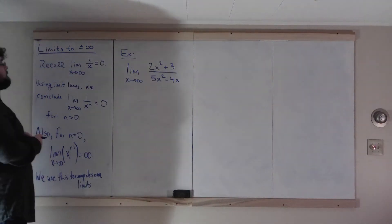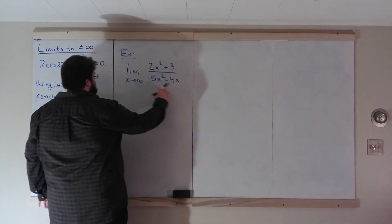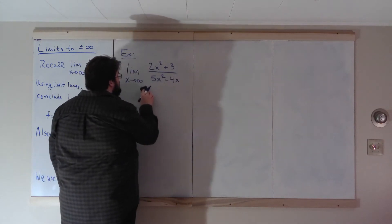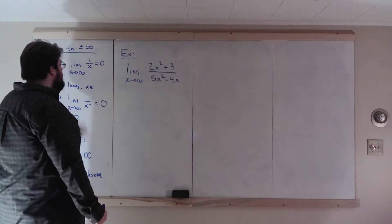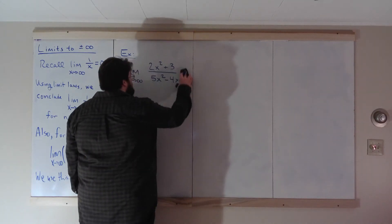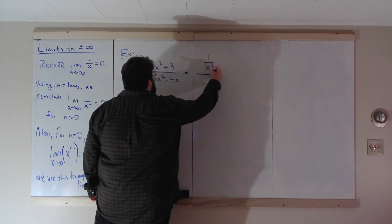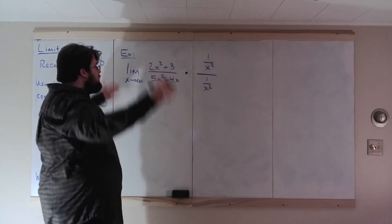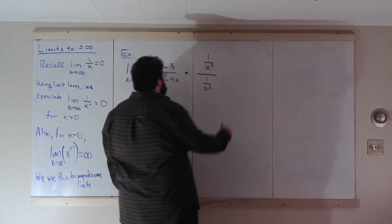First example: the limit as x goes to infinity of (2x² + 3)/(5x² − 4). This is an infinity-over-infinity form — a polynomial's behavior as x goes to infinity is determined by its leading term. You could apply L'Hôpital's Rule twice here, or follow this process: look at the denominator, find the largest exponent, which is 2, and multiply everything by (1/x²)/(1/x²). Notice we're multiplying by 1, so this does not change the question.